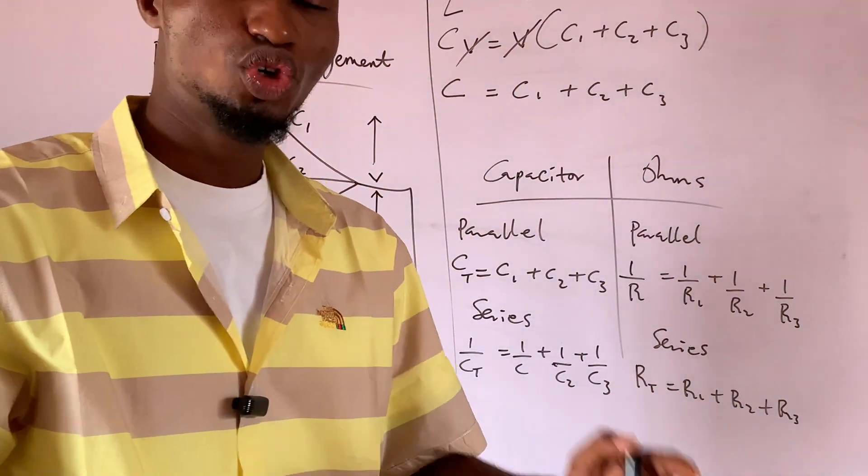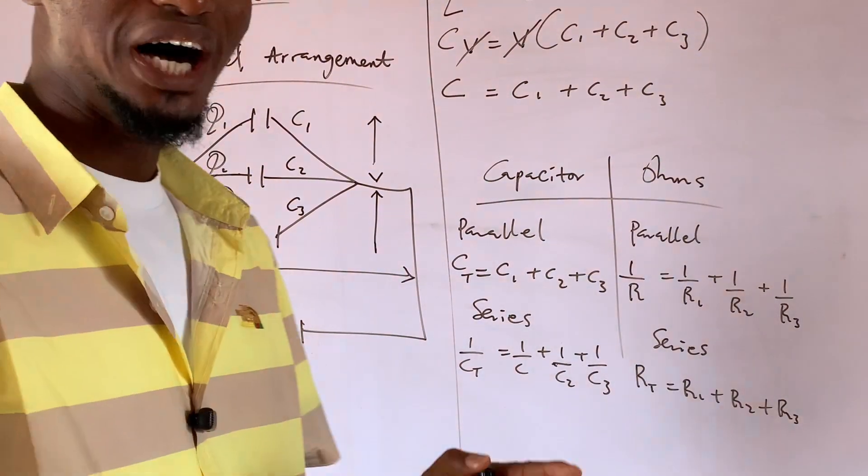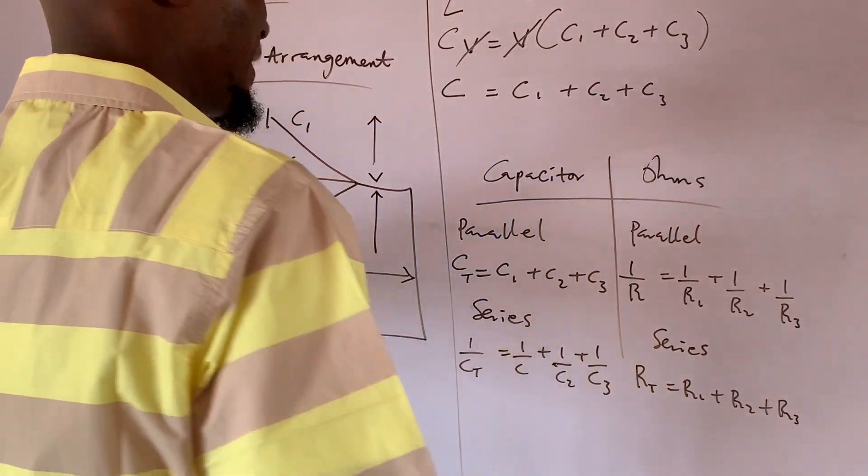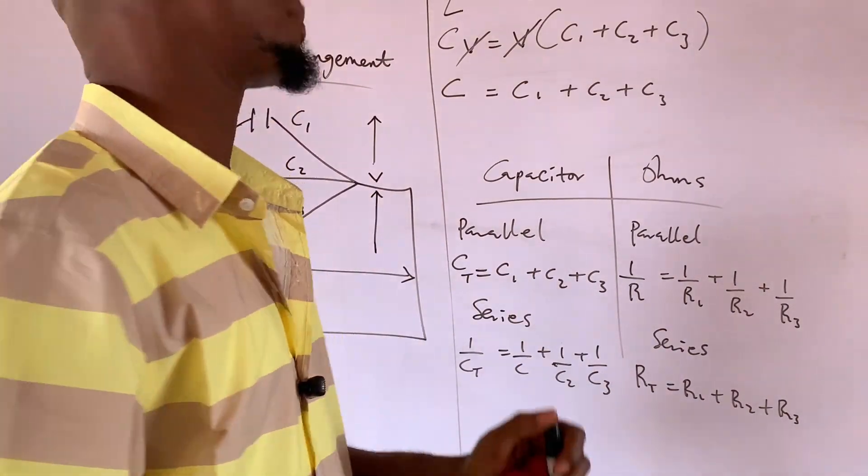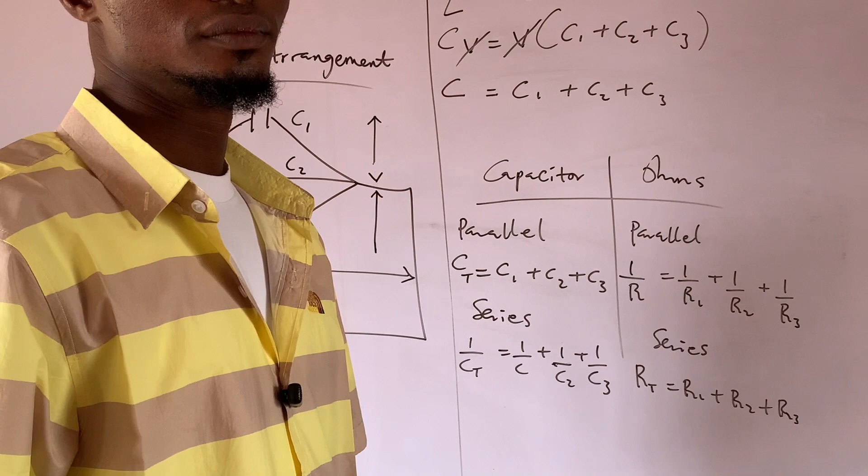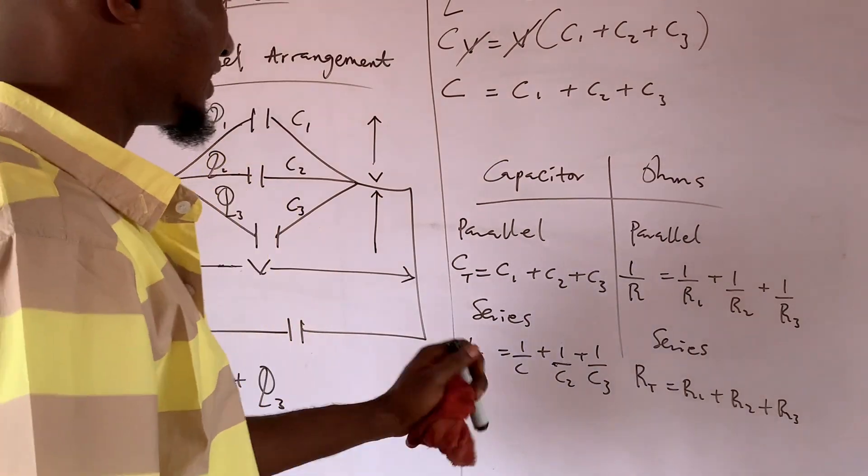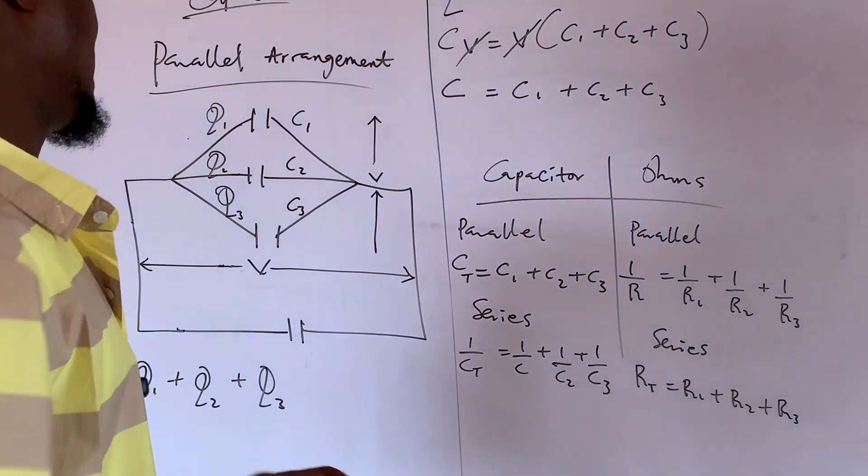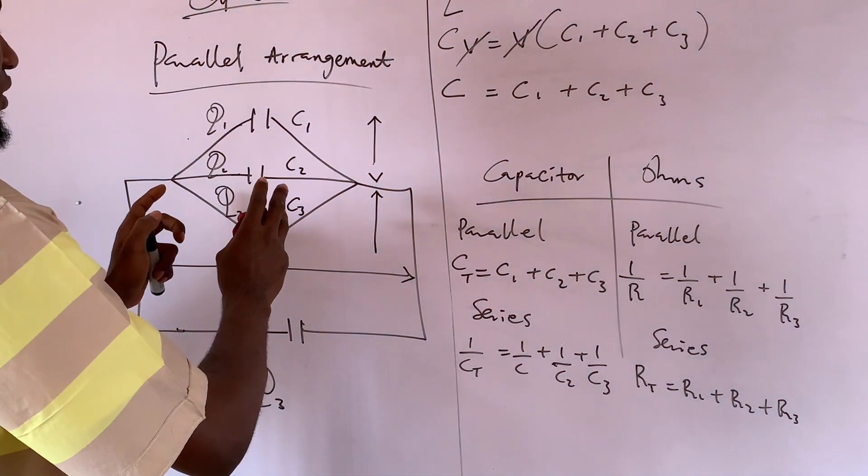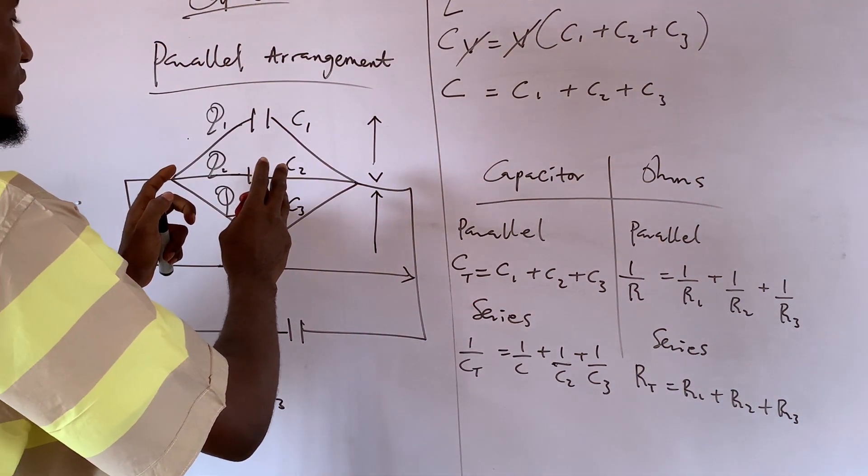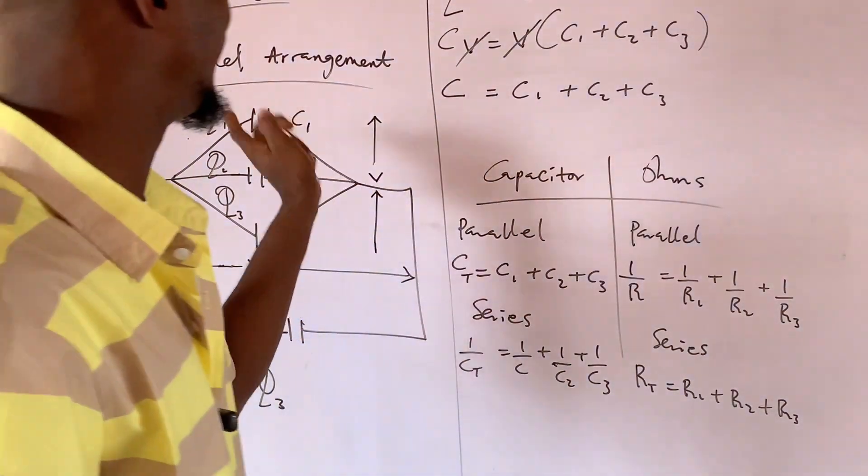Now, for series is going to be RT equals to R1 plus R2 plus R3. Look at this thing very well. I don't want you to get it twisted. I don't want to confuse you. Why I wrote this on the board is to enable you to come to balance, so that you have a balanced perspective of capacitance of a capacitor. You understand? So that is that.